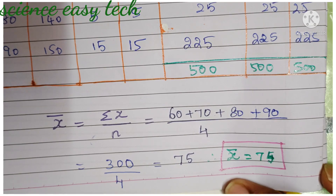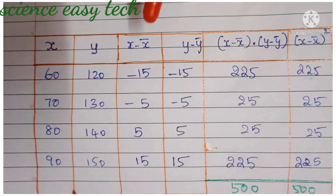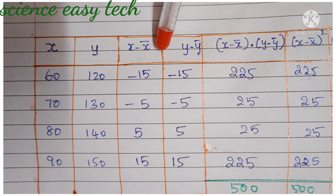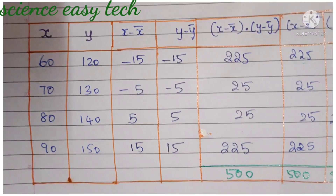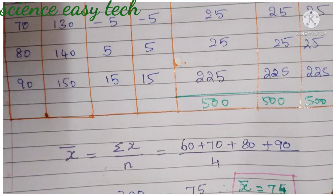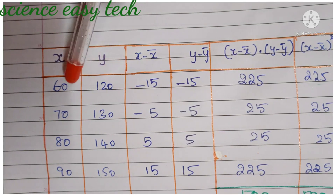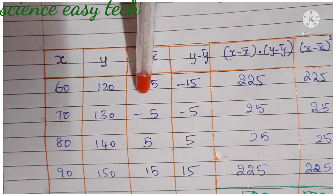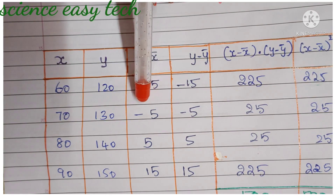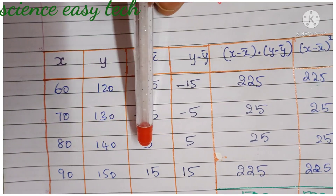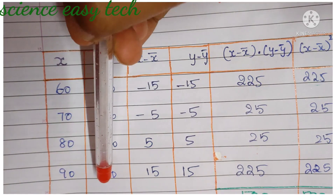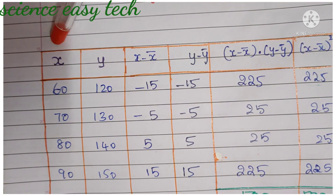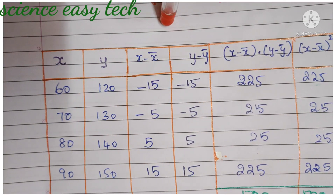Now we have to find x − x̄. We found x̄ = 75, so each x value is subtracted from 75. First: 60 − 75 = −15. Second: 70 − 75 = −5. Third: 80 − 75 = +5. Fourth: 90 − 75 = +15. So we have found x̄ and from that we have found x − x̄.